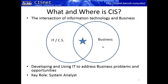The first question students have when they come to us is: what is CIS? What is Computer Information Systems, and where does it sit in the continuum between technology and business? The answer is it's squarely in the middle — this intersection between information technology and business. Computer science is also relevant here as a well-known discipline. The bottom line: computer information systems is about developing and using information technology to address business problems and opportunities.